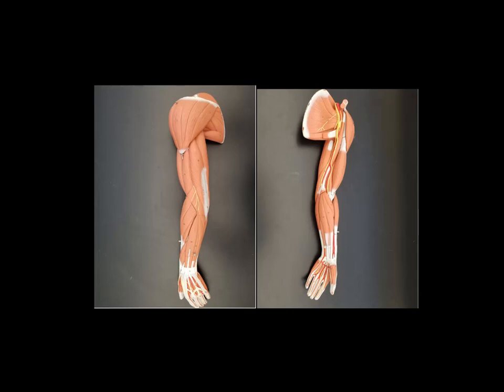Now just to kind of orient you so that you know what you're looking at, here in this left image, the hand down here, you're looking at the back of the hand. So this is the back of the forearm, the back of the upper arm, and here's the shoulder area.